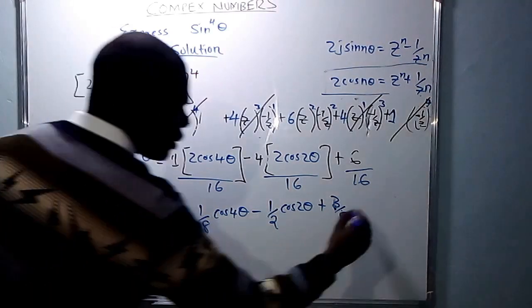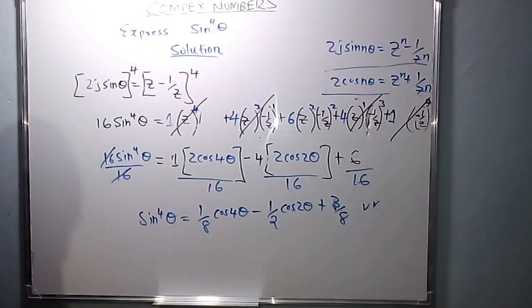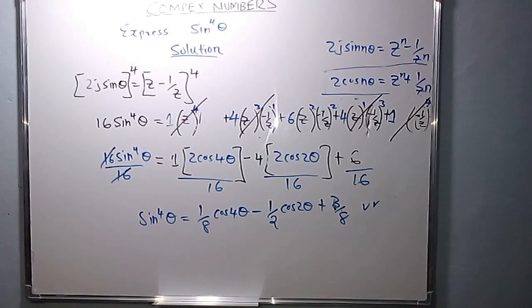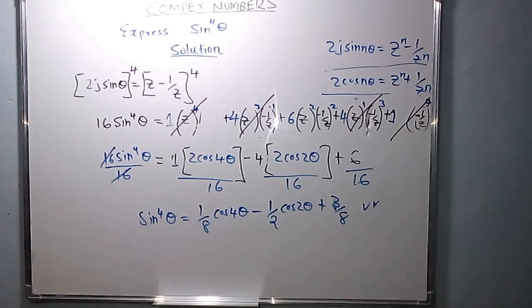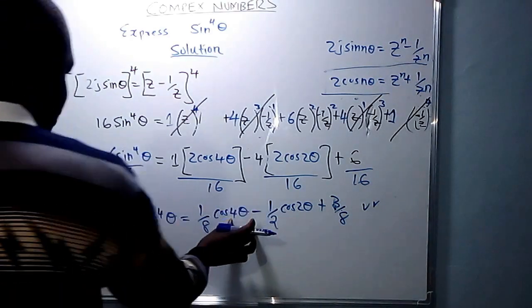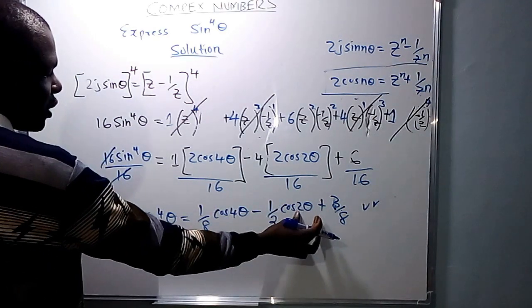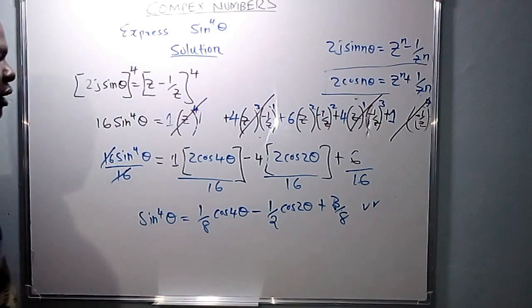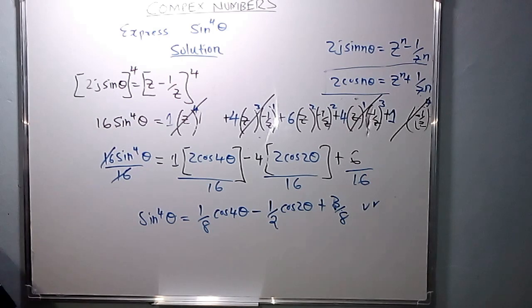So we have now expressed sine raised to power 4 theta in terms of cosines of multiples of theta. You can see cos 4 theta means 4 times theta — a multiple of theta — and cos 2 theta means 2 times theta, also a multiple of theta. That is how to express sine raised to power 4 theta in terms of multiples of theta using De Moivre's theorem.